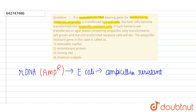Now the question says that if such bacteria are transferred onto agar plates containing ampicillin, only the transformants will grow and the untransformed recipient cells will die.